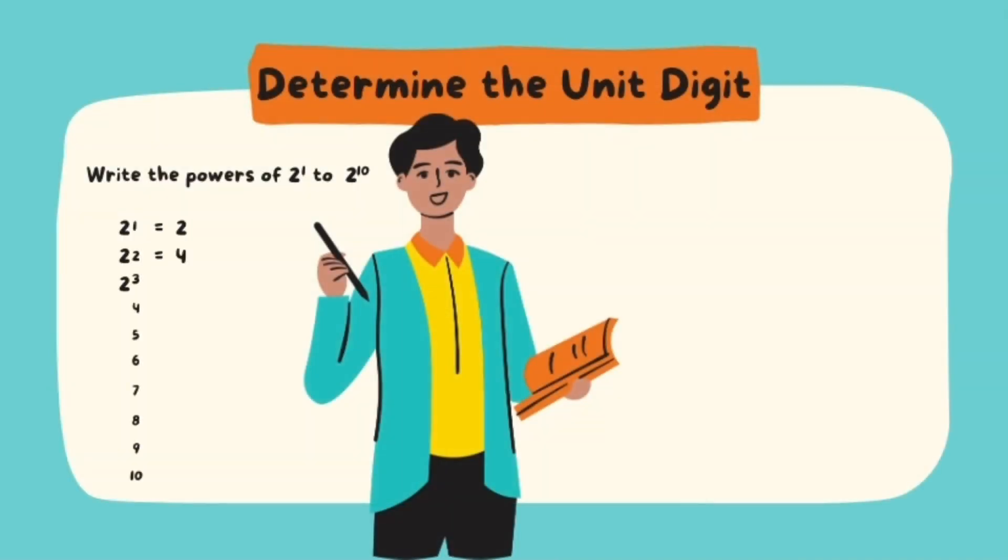2 raised to 1 is 2, 2 raised to 2 is 4, 2 raised to 3 is 8, 2 raised to 4 is 16, 2 raised to 5 is 32, 2 raised to 6 is 64, 2 raised to 7 is 128, 2 raised to 8 is 256, 2 raised to 9 is 512, and 2 raised to 10 is 1024.